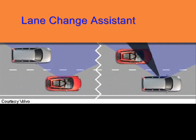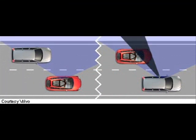Lane change assistance systems utilize the vehicle's collision warning system to notify the driver in the event of a possible collision while changing lanes. This is useful in situations where a blind spot has prevented the driver from seeing a car to the side.